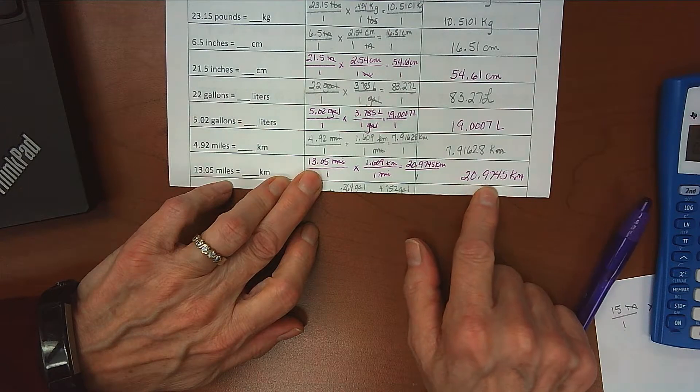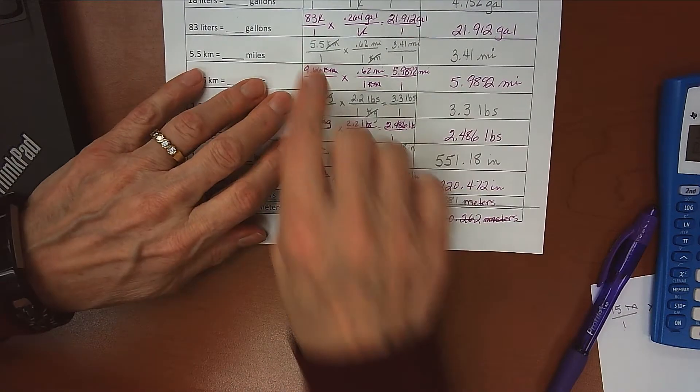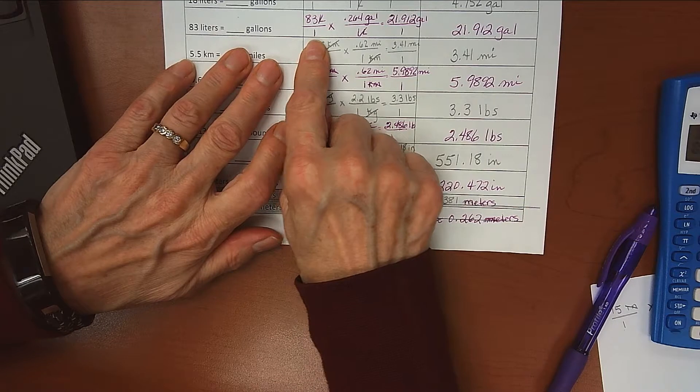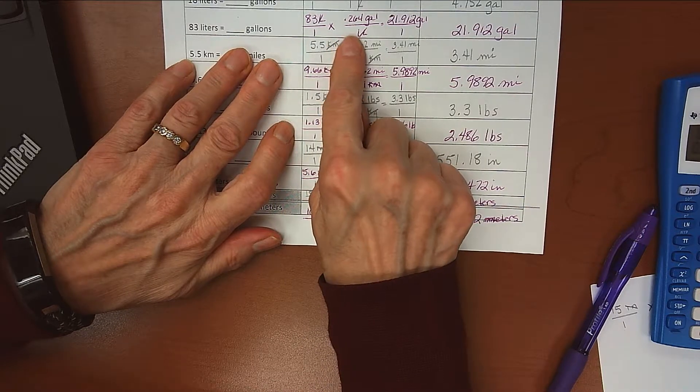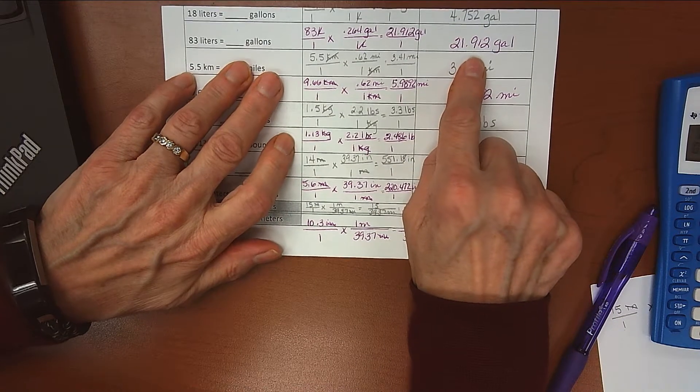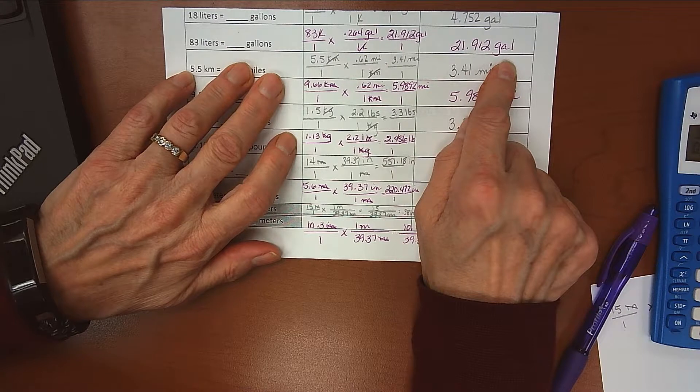Next one, my conversion factor for 83 liters to gallons was 0.264 gallons over 1 liter. When I multiplied that out I got 21.912 gallons.